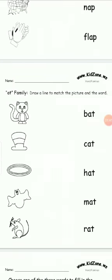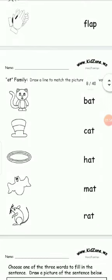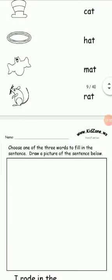Add family, draw a line to match the picture and the word. First picture is cat, then hat, mat, bat, rat. Match the picture with words.